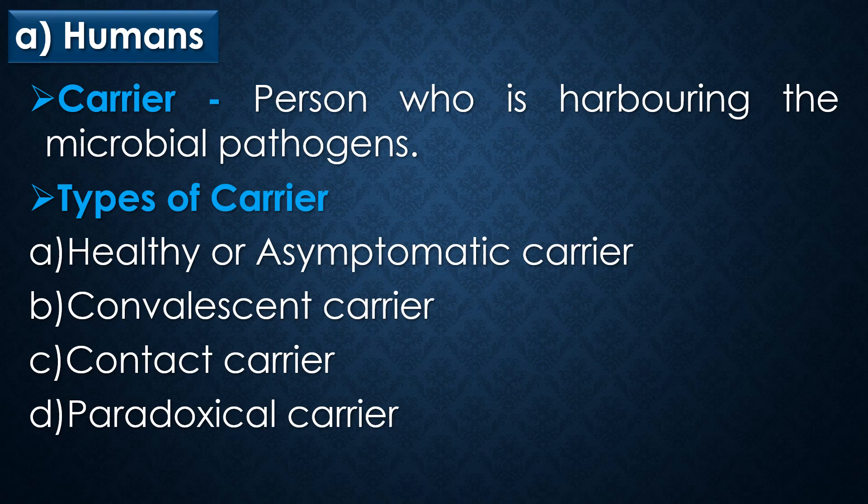The first source of microbial infection is humans. The most common source of infection is humans themselves. A carrier is a person who is harboring microbial pathogens. Common types of carriers include the healthy or asymptomatic carrier, convalescent carrier, contact carrier, and paradoxical carrier.